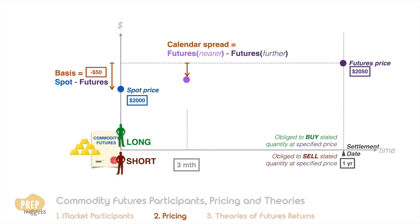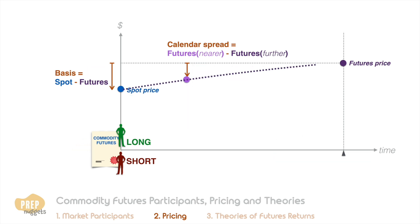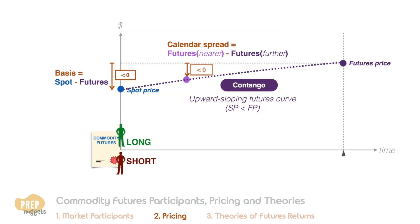So if three-month gold futures is $2,010, the calendar spread between three months and one year gold is minus $40. Be very careful with the signs when calculating basis or calendar spreads — they can be positive or negative. In a case where the futures curve is upward sloping, the futures market is said to be in contango. In a contango market, the calendar spread and basis of futures contracts are negative.